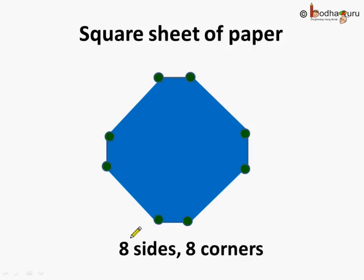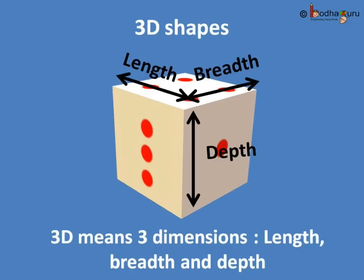So now you know how to find out the number of corners and sides of different 2D shapes. Now we know about 3D shapes. Apart from length and breadth, they also have the third dimension which is the depth. You know even the 3D shapes have corners and they have edges and faces too.